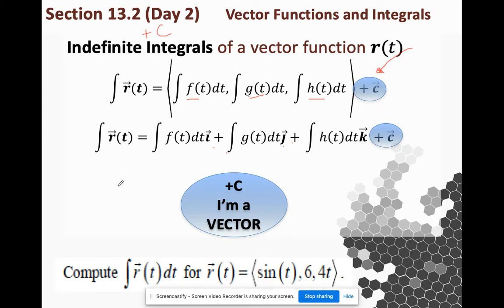Well, the indefinite integral would be negative cosine t, 6t, and 2t squared, all plus vector c. Or you could write it like this: negative cosine t i, and 6t j, and 2t squared k, and vector c.